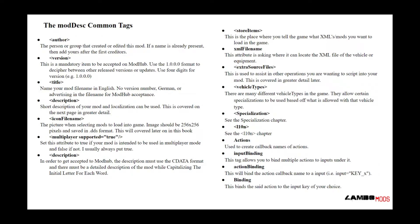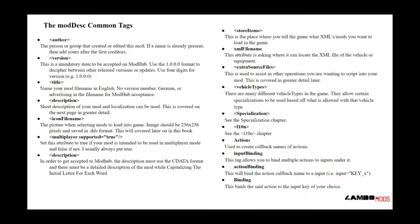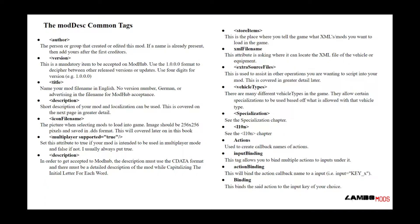We're going to start off with these common tags by reading them one by one and explaining what each tag means. Starting off with the author — the person or group that created or edited this mod. If a name is already present, then add yours after the first creditors. The version is a mandatory item to be accepted on ModHub. Use the 1.0.0.0 format to decipher between other releases or updates — use four digits for the version.